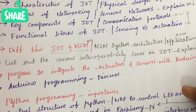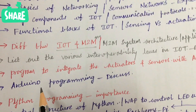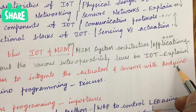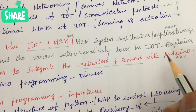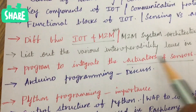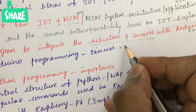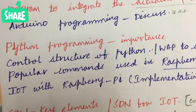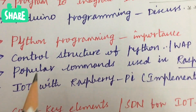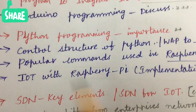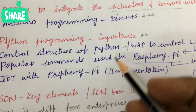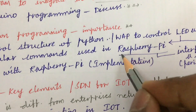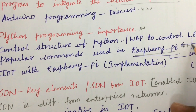From these two parts you are going to get one question. Writing a program to integrate actuators and sensors with Arduino is also an important question — related to actuators and sensors you will get one question for sure. Arduino program explanation and discussion in detail will form the fourth question. From the third unit, Python programming and its importance, as well as the control structure of Python and controlling an LED using Raspberry Pi, are key topics.